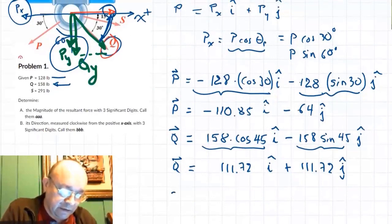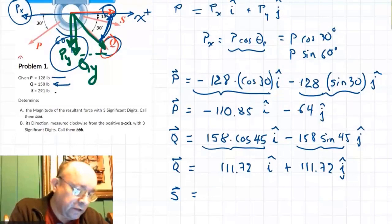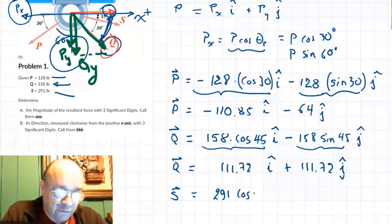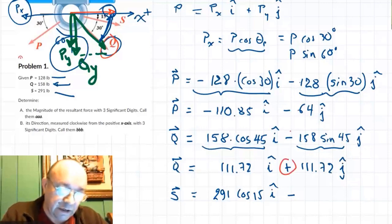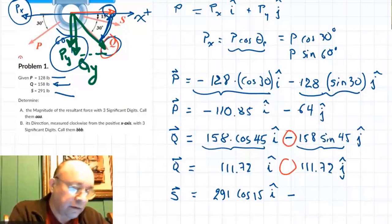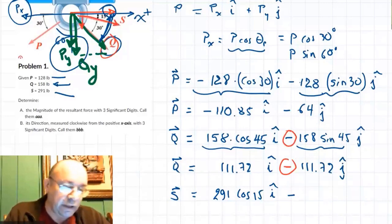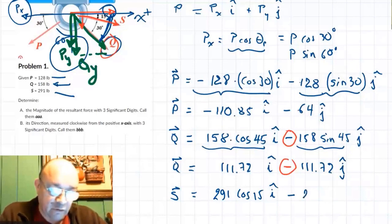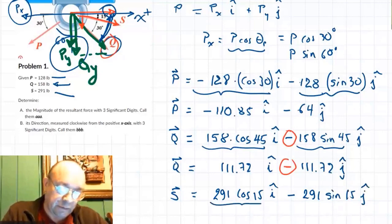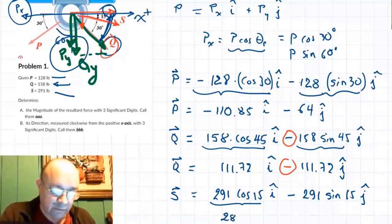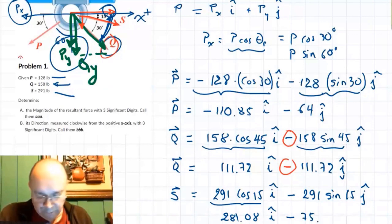For force S, the component is 291 cosine 15 i. I made a mistake — that X component is actually minus, so let me fix that. And force S also has a negative component in the Y direction going down, so that will be minus 291 sine 15 degrees j. Those numbers give 281.08 i minus 75.316 j.